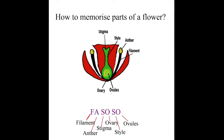F represents filament, A is anther, S is stigma, O is ovary, S is style, and the last letter O is ovule. FA is the male part of the flower, and SOSO is the female part of the flower.